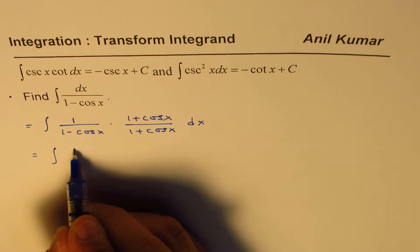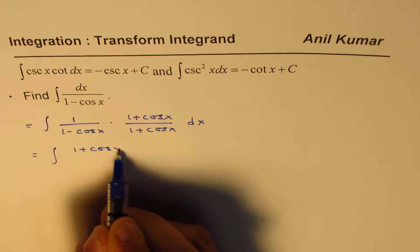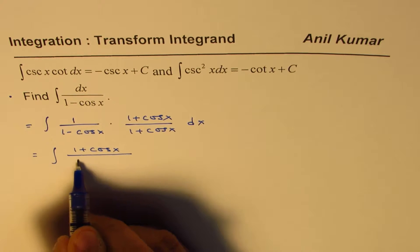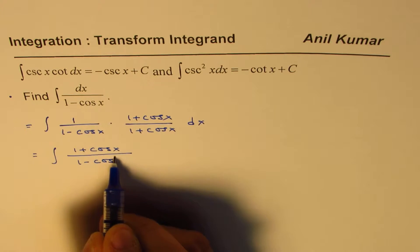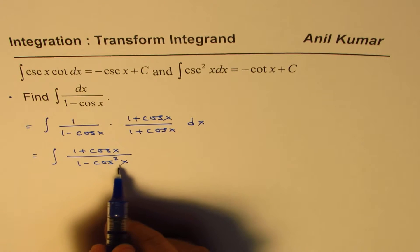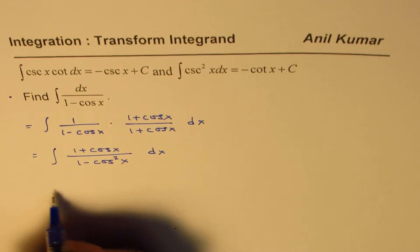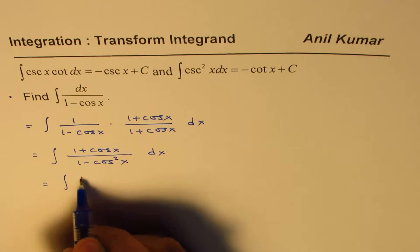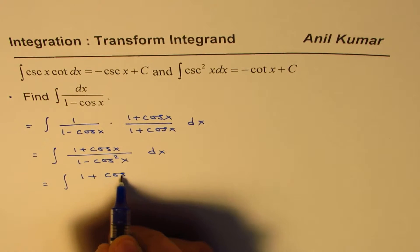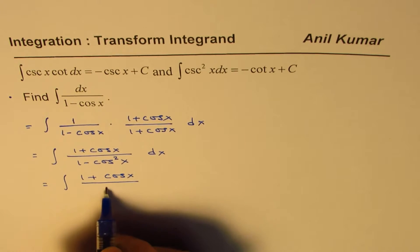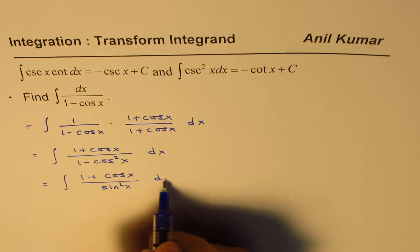So it could be written as 1 plus cos x over 1 minus cos square x. Now 1 minus cos square x is sine square x, correct? So we can write this as 1 plus cos x over sine square x dx.